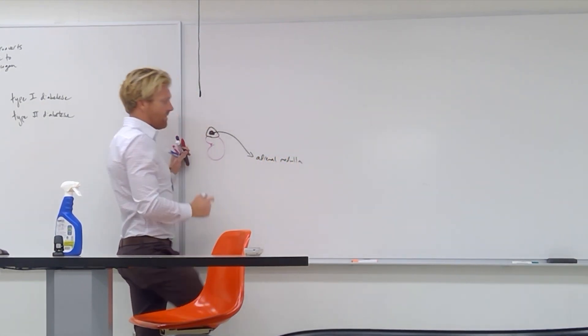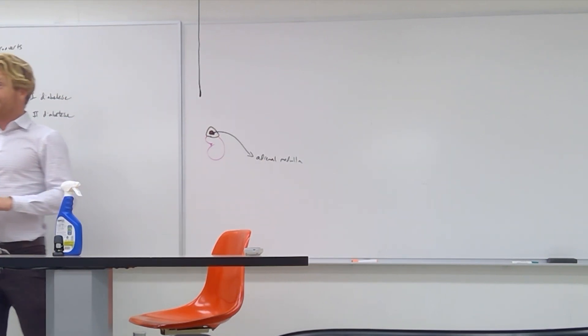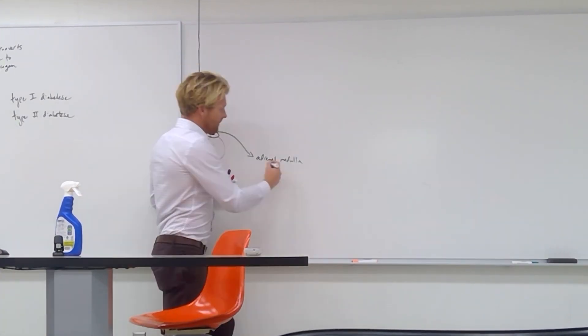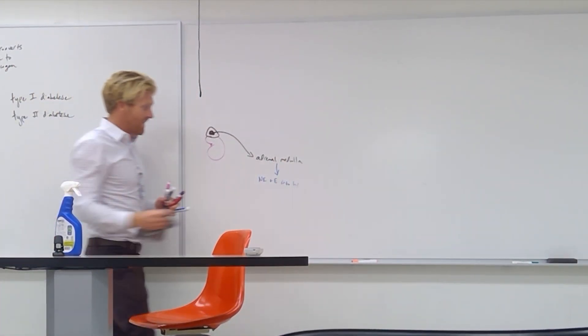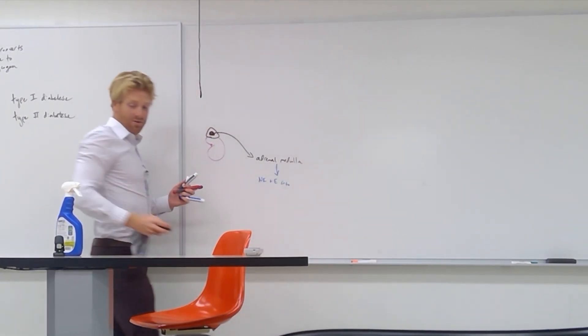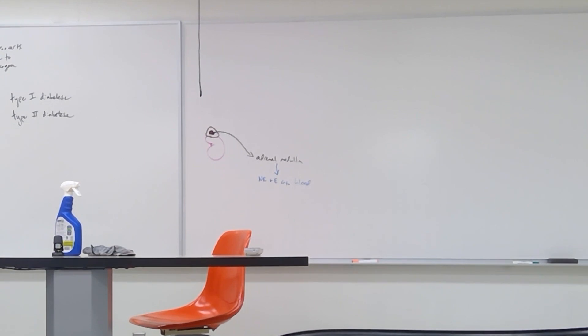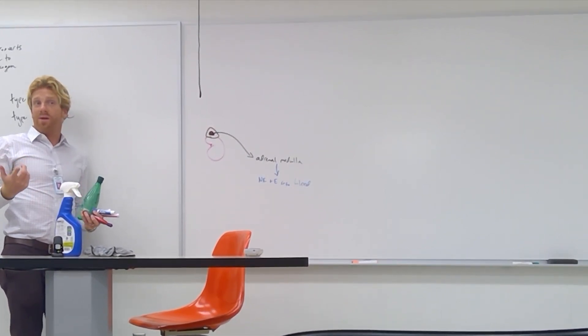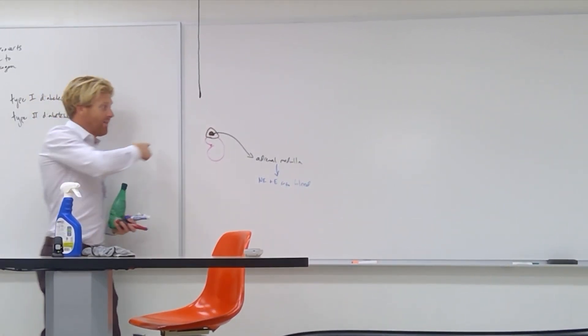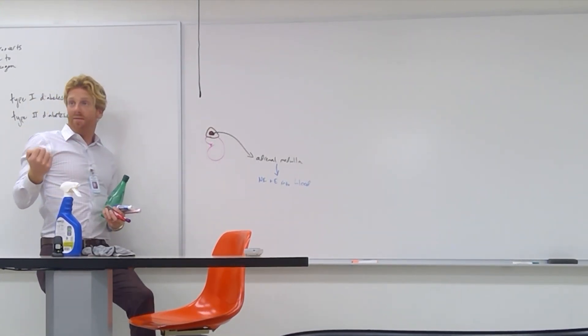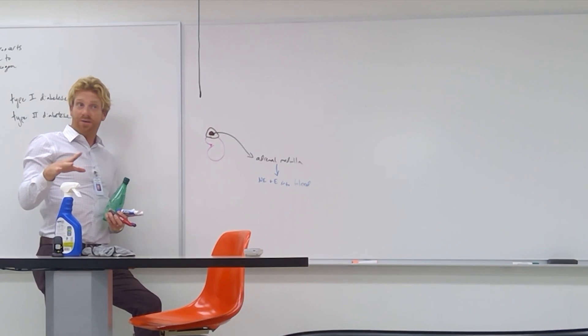The adrenal medulla releases a bunch of norepinephrine and epinephrine into the blood. And we've talked about when this happens. What nervous system is this associated with? Sympathetic. So what we'll have is we'll have one of our sympathetic pathways. It sends an action potential in a preganglionic neuron that goes out to the adrenal medulla. That triggers that adrenal medulla to release norepinephrine and epinephrine into the bloodstream.